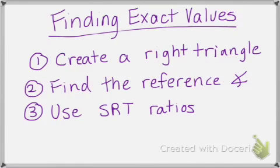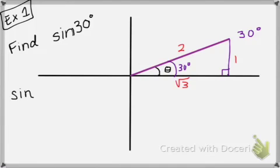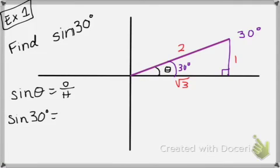Here are the steps for finding exact trig values. First, create a right triangle with your given angle. Then find the reference angle, and use your special right triangle ratios to find the values. So if I ask you to find the sine of 30 degrees, I'm going to drop down an altitude to create a right triangle. This is my reference angle, which is 30 degrees. This is a 30-60-90 triangle, so I mark it up: 1, 2, root 3. Sine is opposite over hypotenuse, so the sine of 30 degrees is 1 over 2.